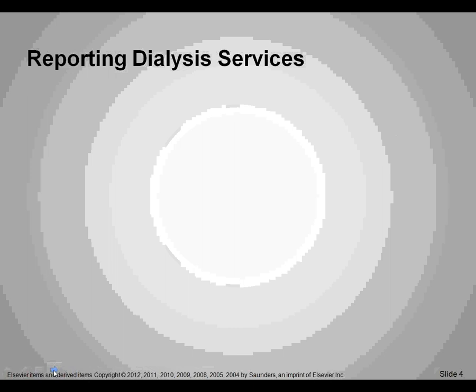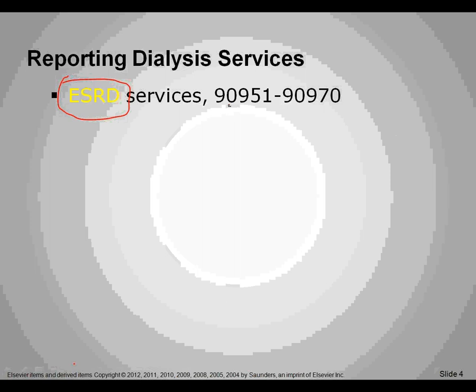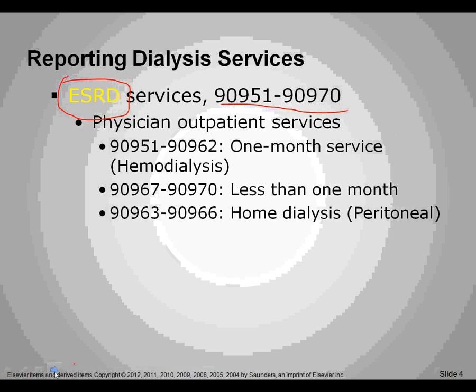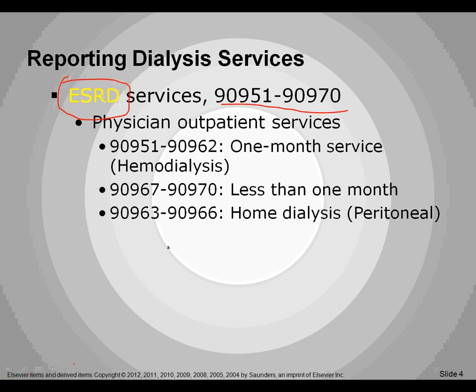The treatment for this condition is dialysis, and this slide talks about how we do the reporting for it. Dialysis is done for ESRD, also known as end-stage renal disease. You have your code range for that. It is physician outpatient services, and it can be done inpatient, but for the one-month service or hemodialysis month-to-month, there are different codes associated with that. If it is less than one month there are some codes associated with that, and if it is home dialysis, which is peritoneal through the stomach, there is a different code range. The time frame of the dialysis services determines our actual code.